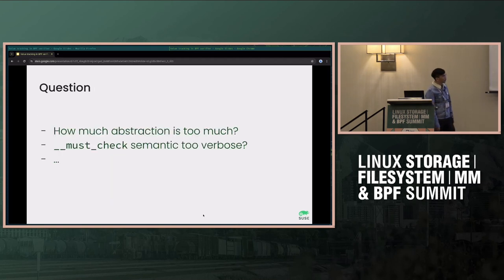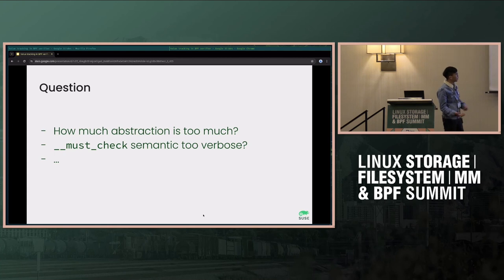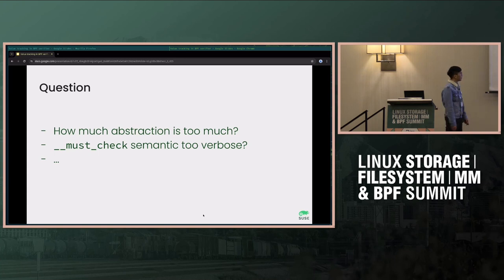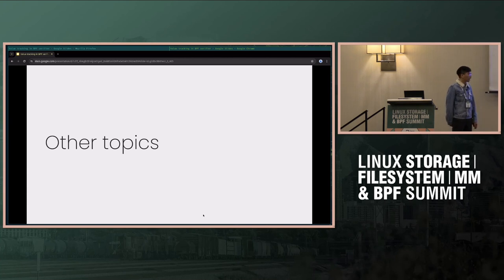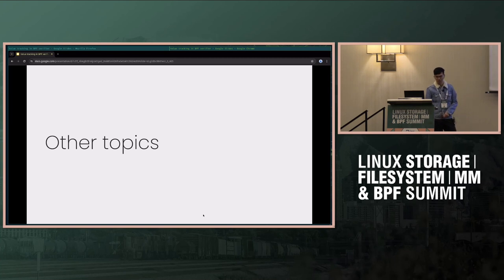Some open questions: how much abstraction is too much abstraction, and the must-check semantic — those are the main proposals. There are other topics that would be nice to discuss and might make the maintenance easier, but I'll stop here and see if there are any questions or comments.